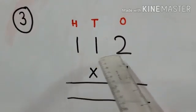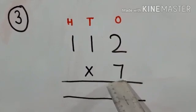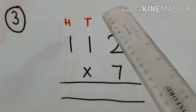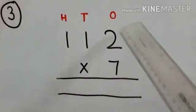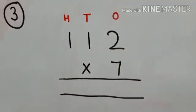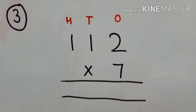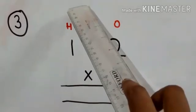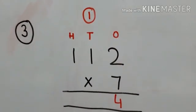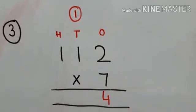Question number 3: we have to multiply 112 with 7. We have to multiply first with the ones-digit number, so we will multiply 7 with 2. Seven twos are 14. From 14, we write 4 down and 1 is carried to the tens place.